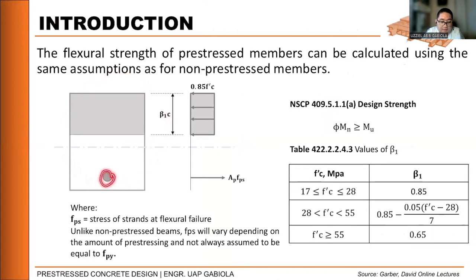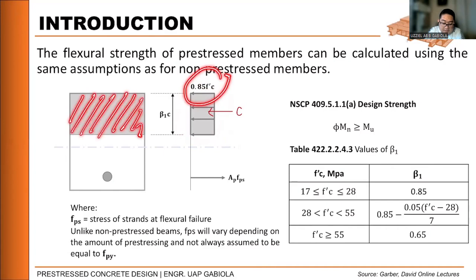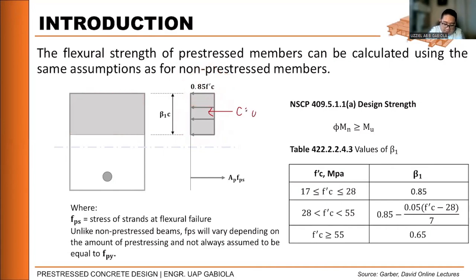To start, the structural strength of a prestressed member can be calculated using the same assumptions for the non-prestressed concrete member — the Whitney stress block of 0.85 f'c is also used for prestressed members. If we have a section, a beam with a steel reinforcement or tendon, the stress diagram is the same, with a compression block whose resultant C equals 0.85 f'c times the area of the compression block.